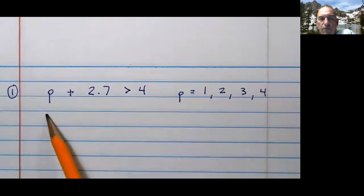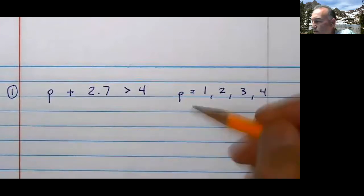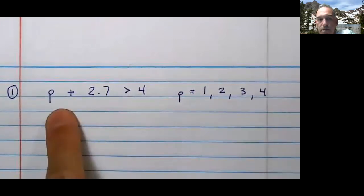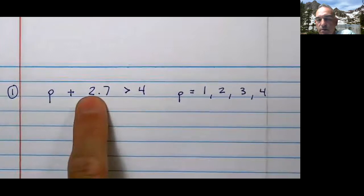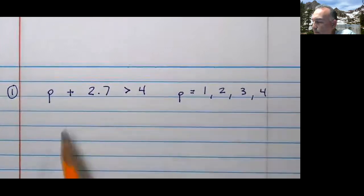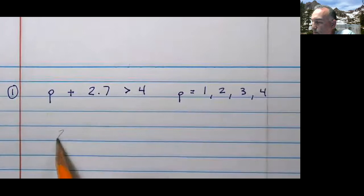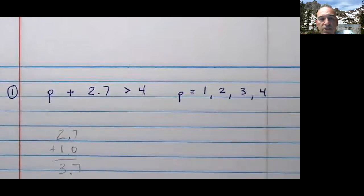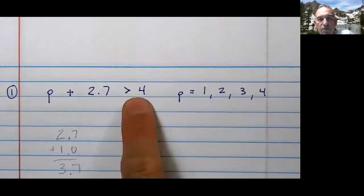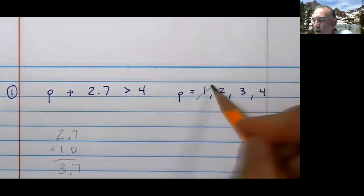So take a look. If you first substituted 1 there, it would look like this. I'd have 1 plus 2.7. Let's do it. So I'd have 2.7 plus 1. And I'd have 3.7. Is 3.7 greater than 4? No, it is not. So that is not a solution.